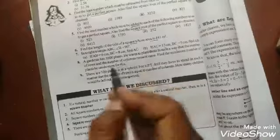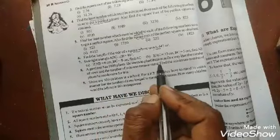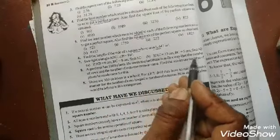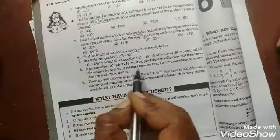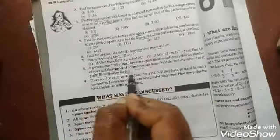The question is like this: a gardener has 1000 plants. He wants to plant these in such a way that number of rows and the number of columns remains the same. Find the minimum number of plants he needed to more for this.